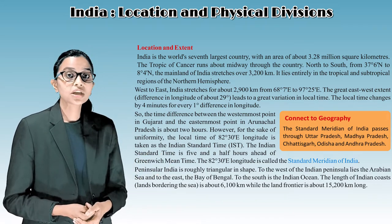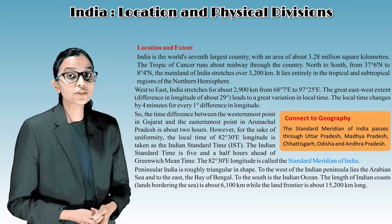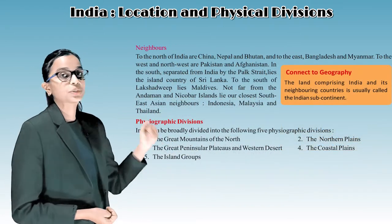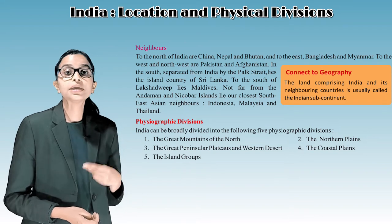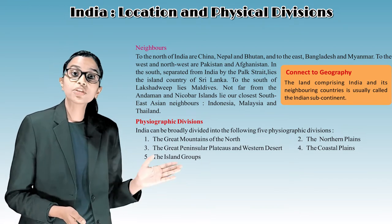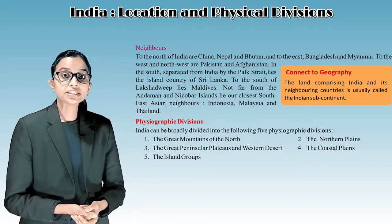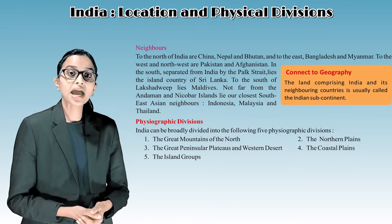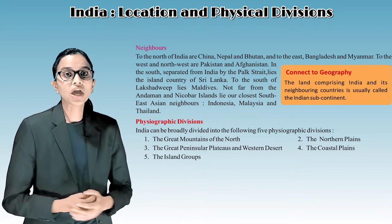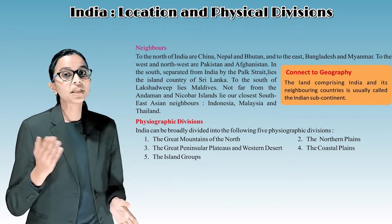The length of India's coastline bordering the sea is about 6,100 kilometers, while the land frontier is about 15,200 kilometers long. To the north are China, Nepal, and Bhutan; to the east, Bangladesh and Myanmar; to the west and northwest, Pakistan and Afghanistan. Separated from India by the Palk Strait lies the island country of Sri Lanka. To the south of Lakshadweep lies Maldives. Not far from the Andaman and Nicobar Islands lie India's closest Southeast Asian neighbors: Indonesia, Malaysia, and Thailand.